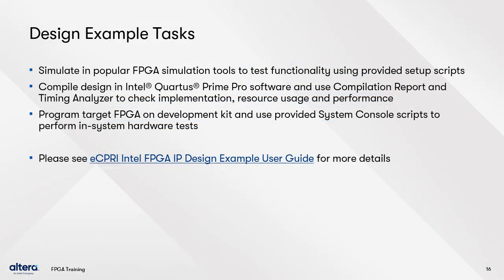Once generated, the design example can be used in several ways. You can run a simulation to review its behavior — simulator setup scripts are provided for popular FPGA simulation tools. You can compile the complete design example and then use the Quartus Prime Pro software's compilation report and timing analyzer to check implementation, layout within the FPGA and tiles, area consumed, and timing performance. Then you can program the FPGA development kit with the compiled design, and system console scripts are provided so you can perform various in-system hardware tests. Please see the design example user guide for more details.